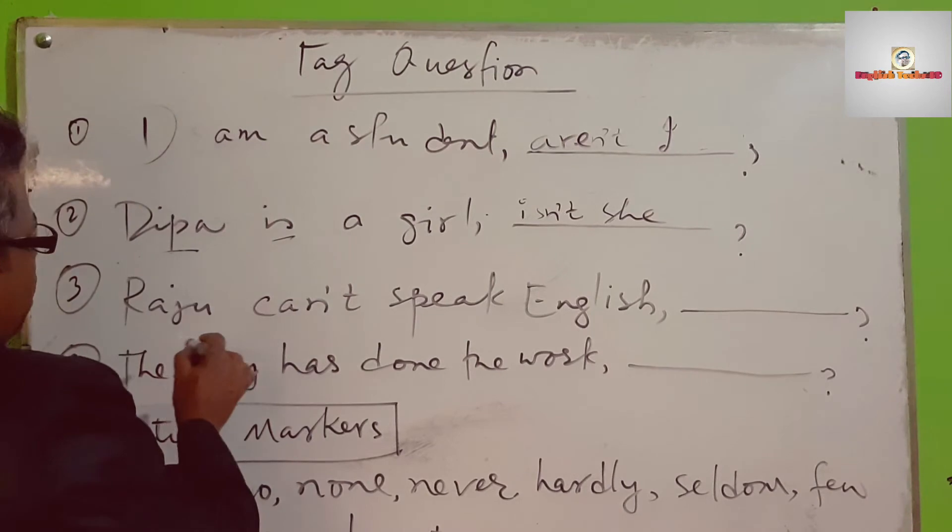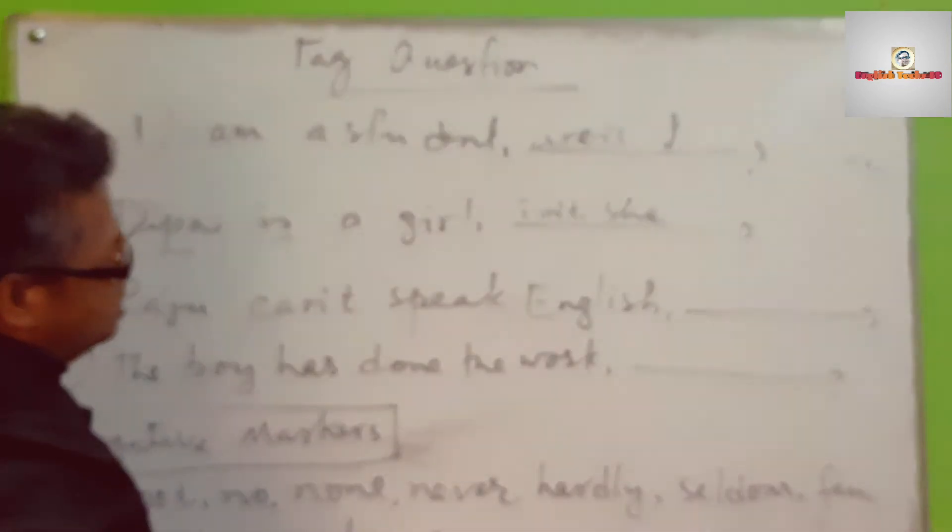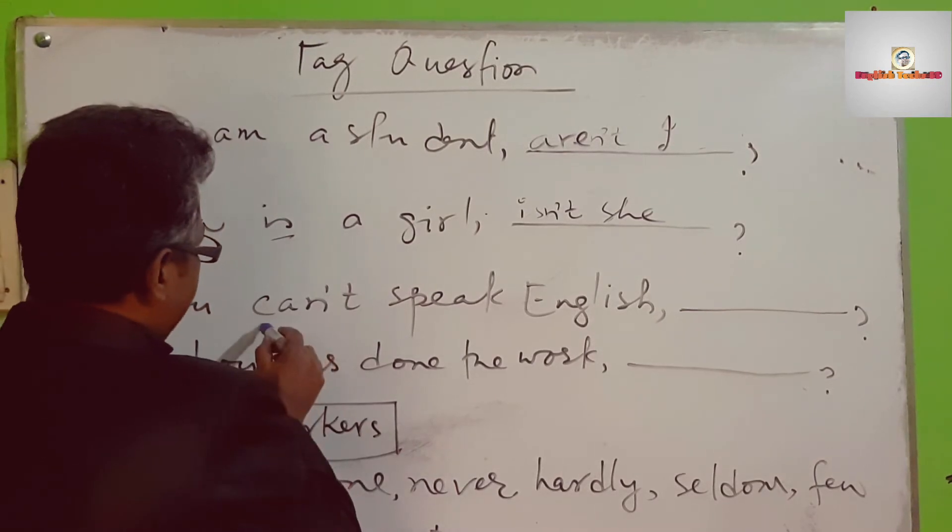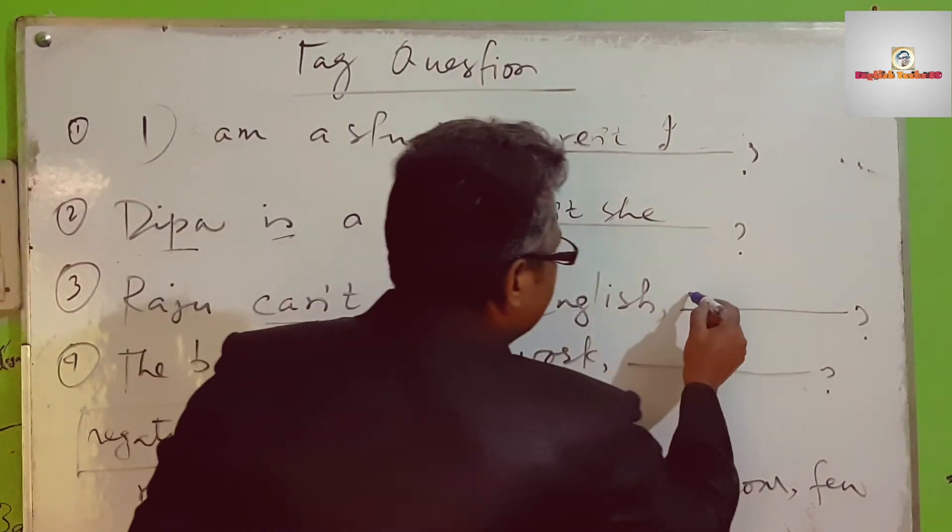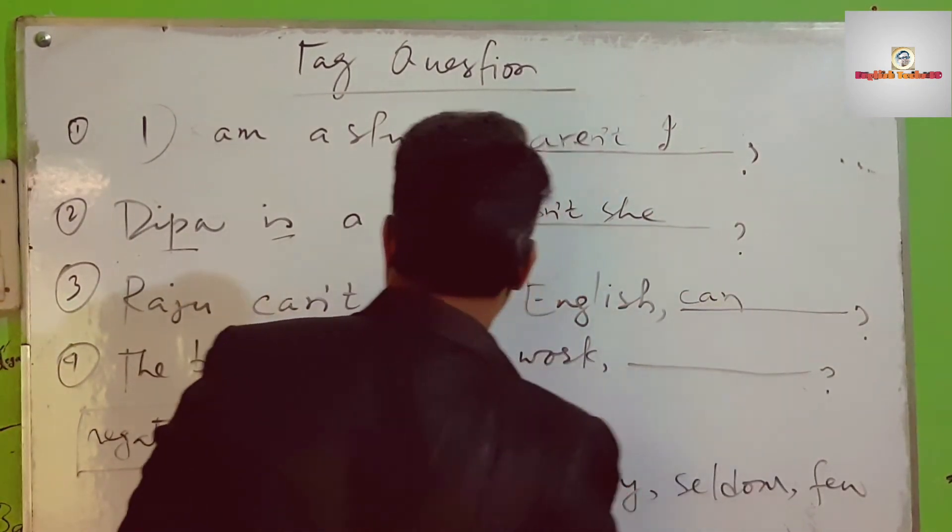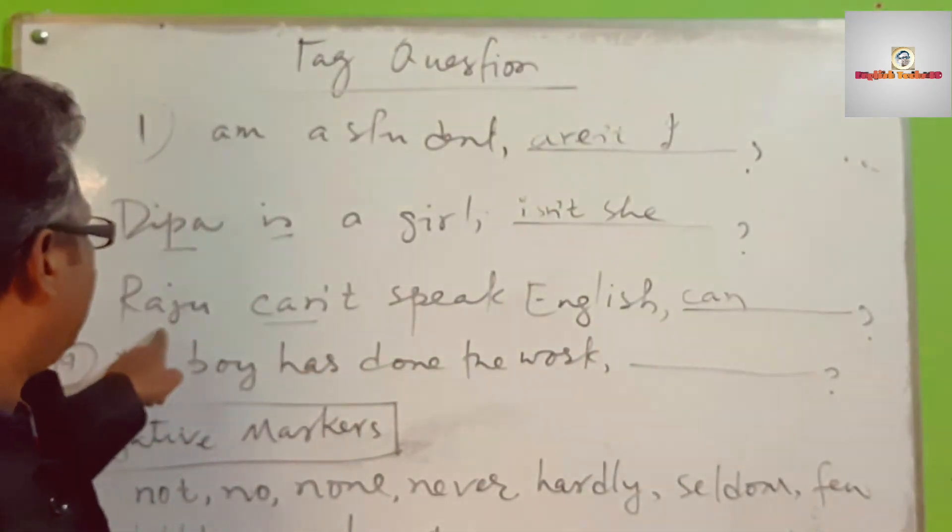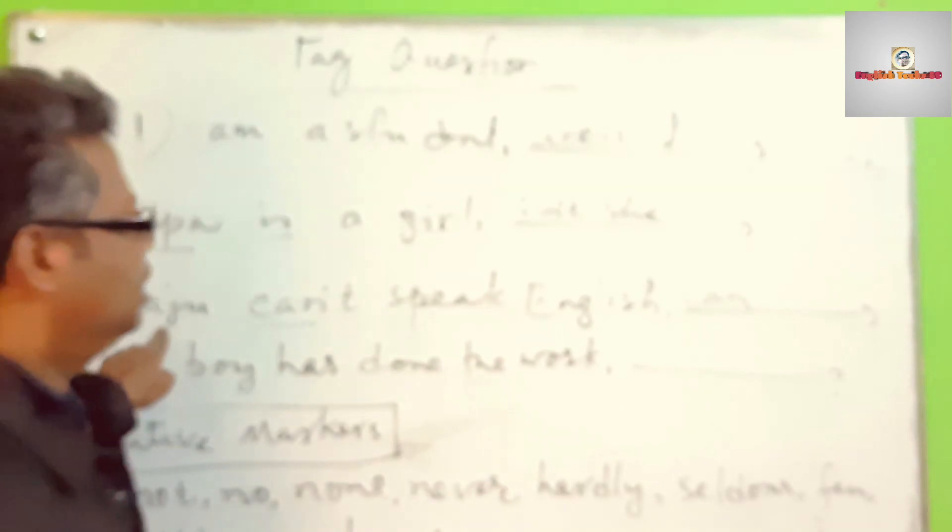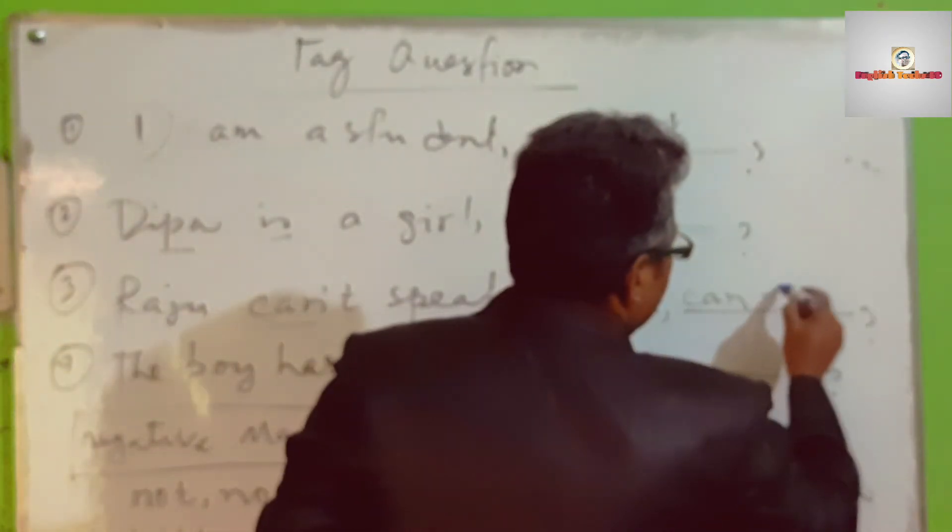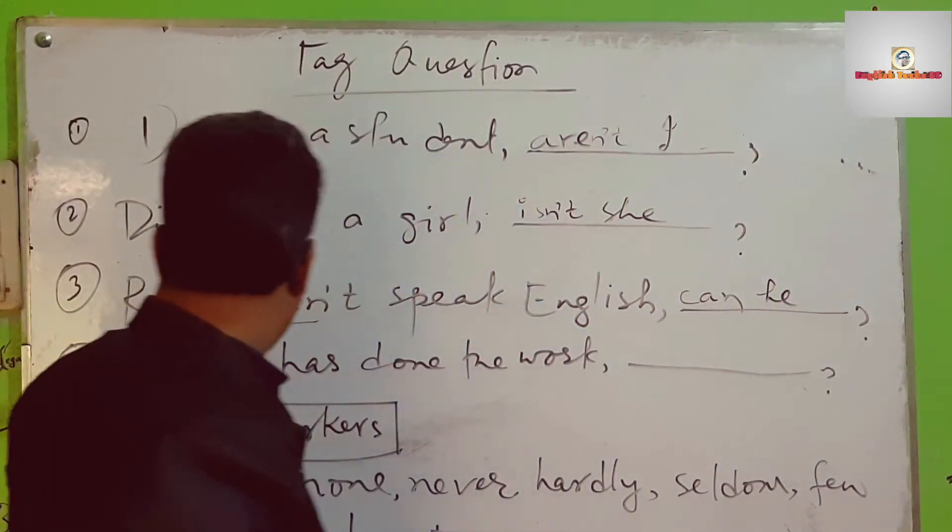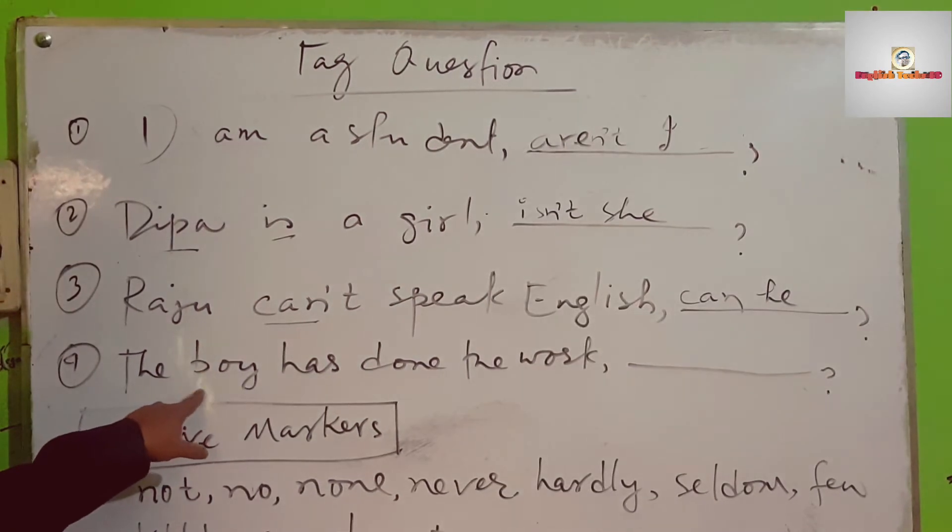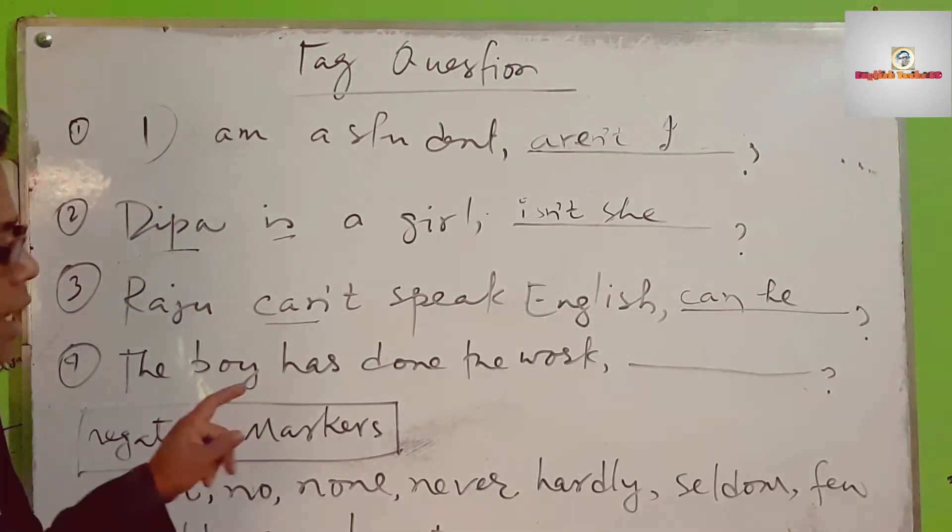Raju cannot speak English - what is the auxiliary verb? 'Can'. There's 'not', a negative marker, so the tag will be positive with the pronoun 'he'. Can he?